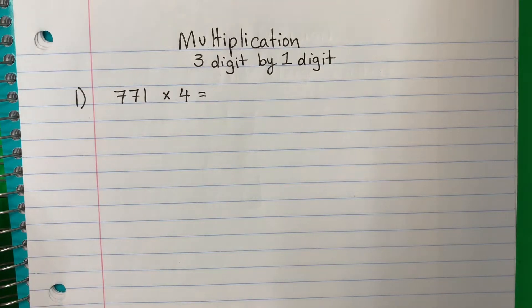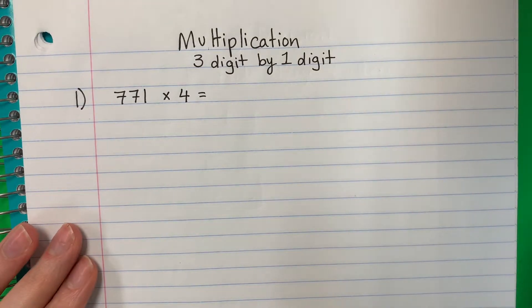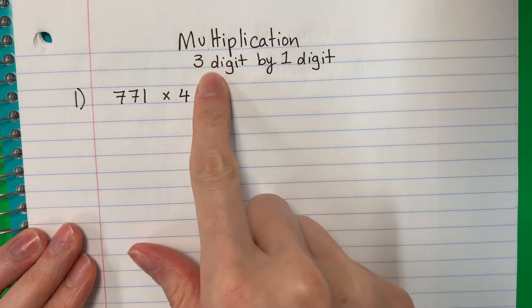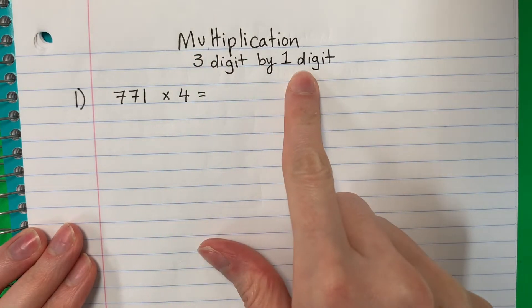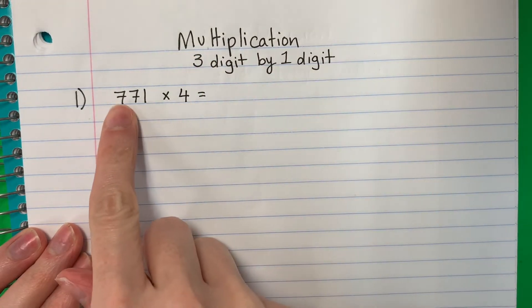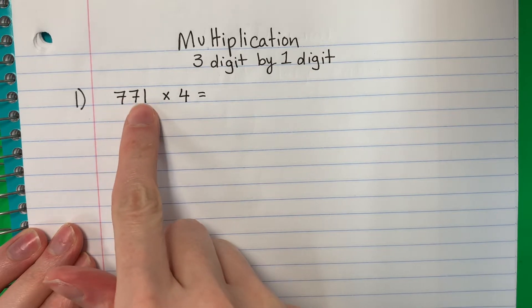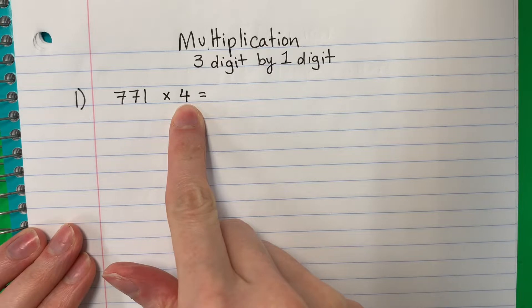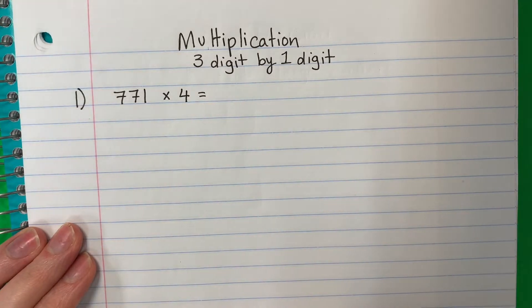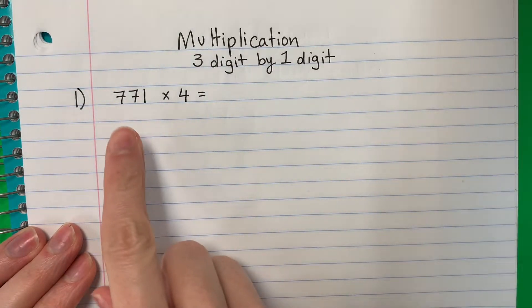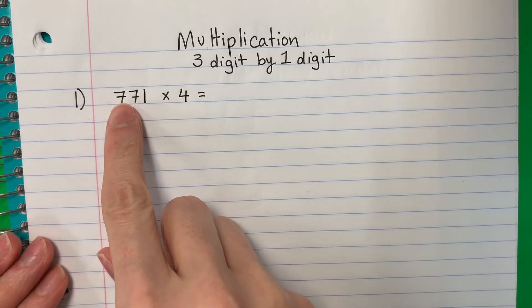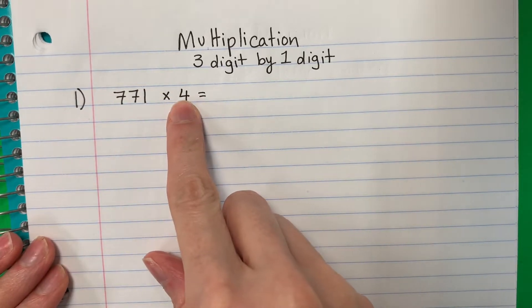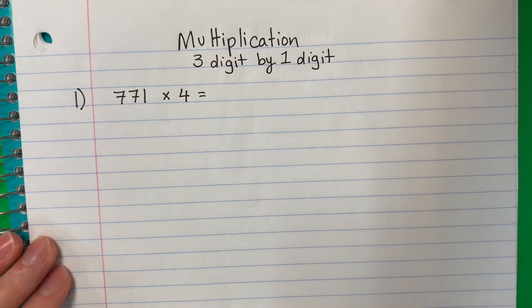Hello! In this lesson, we will be learning how to multiply three-digit by one-digit numbers. So we will have numbers with three digits, and the other number is just one digit. En este video, vamos a multiplicar números, el primer número con tres números, y el segundo número con solamente uno.